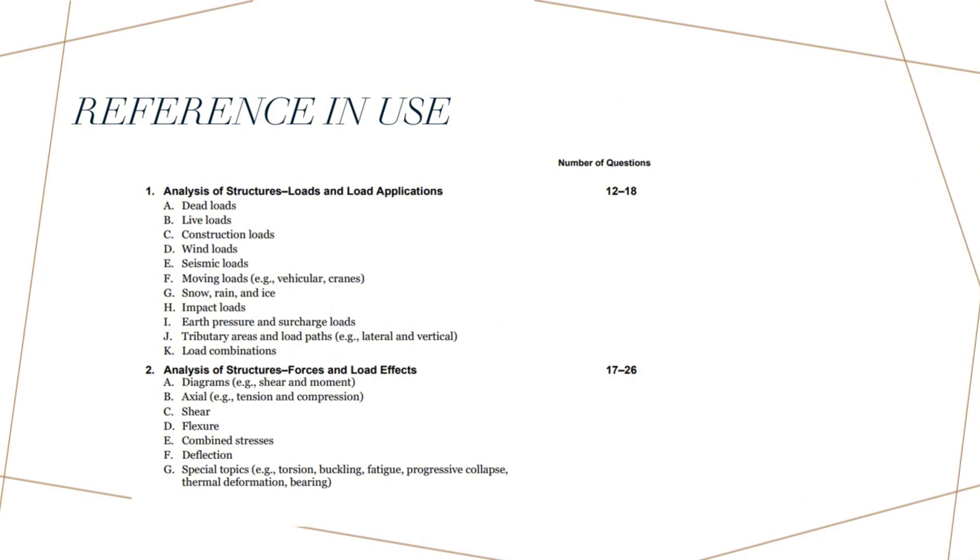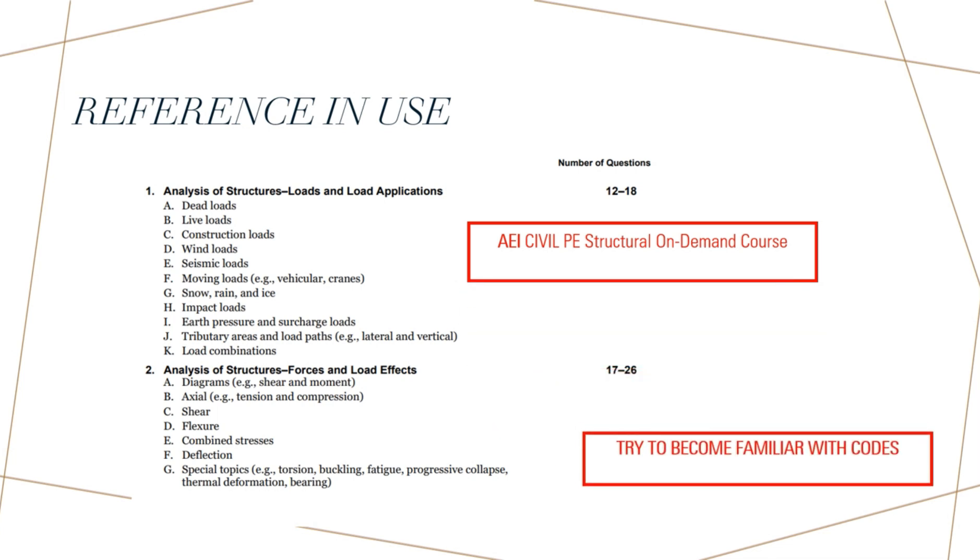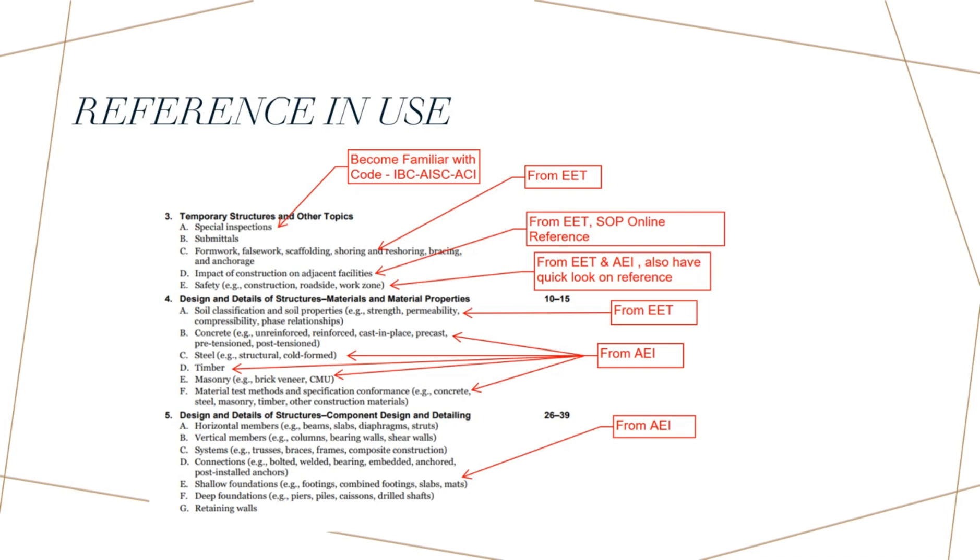Here you can see the different sections of the exam that the exam questions can be from. For the first part, which is analysis of the structure, loads and loads application, and analysis of section two, which is analysis of the structure, force and loads effect, I mainly focused on the AEI Civil PE Structural On-Demand to be prepared for the exam. I should also mention that you should try to become familiar with the codes like ASCE 7-16. You should know exactly where to go to find the answer to your question. Although the codes are searchable, for part three, which is temporary structure and other topics, and for the special inspection, I tried to become familiar with the codes like IBC, ASCE, ACI. That should be sufficient for the exam.